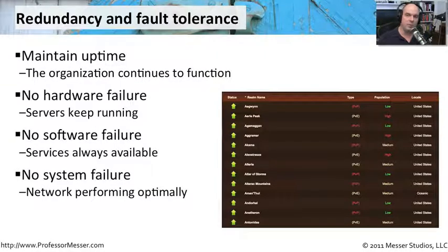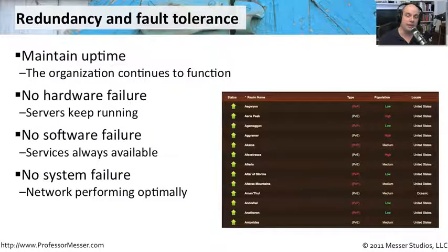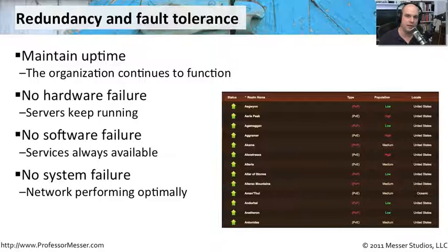We also want to be sure we don't have any major system problems. Maybe we would like redundant routers, redundant firewalls, or redundant wide area network links to the internet. You can really apply different types of redundancy and fault tolerance to many environments. By having these extra systems in place, we can be assured that our systems will be available and up and running 100% of the time.